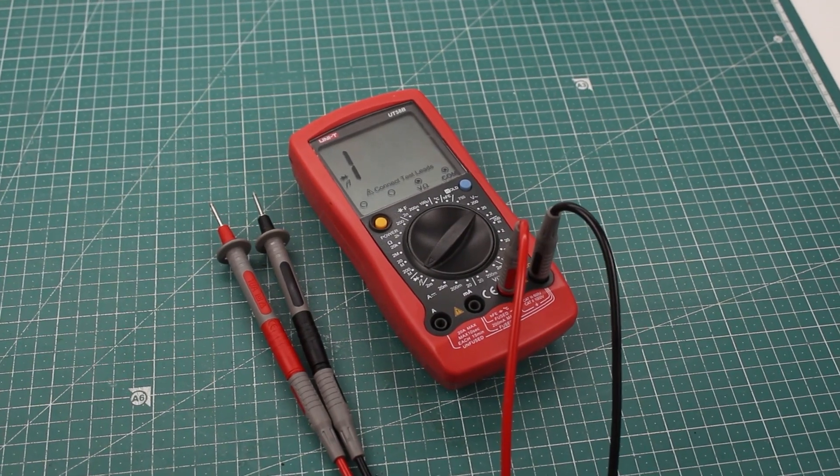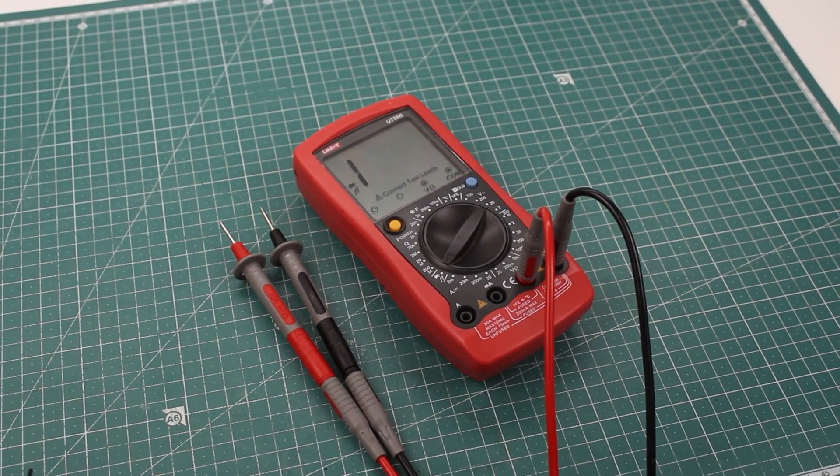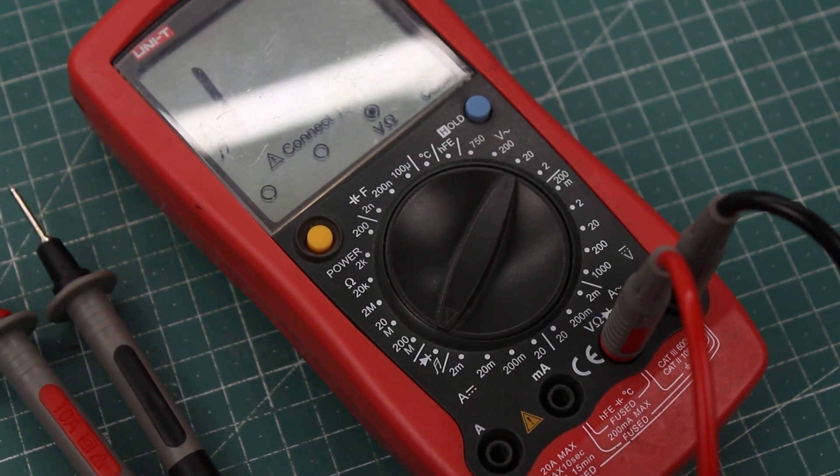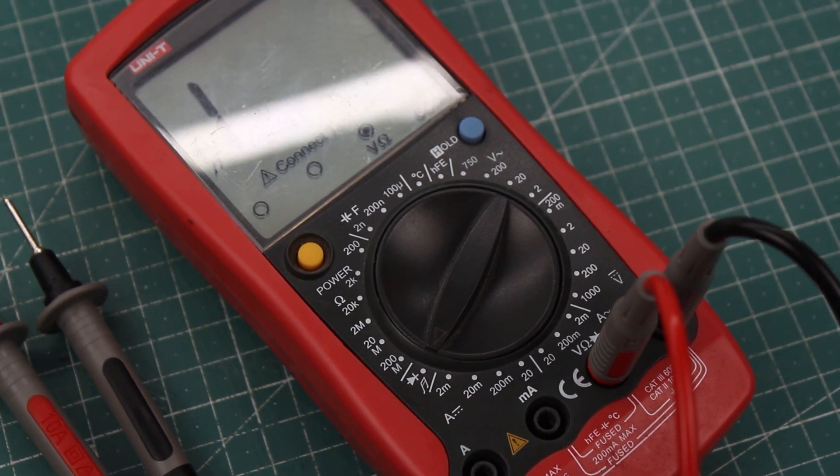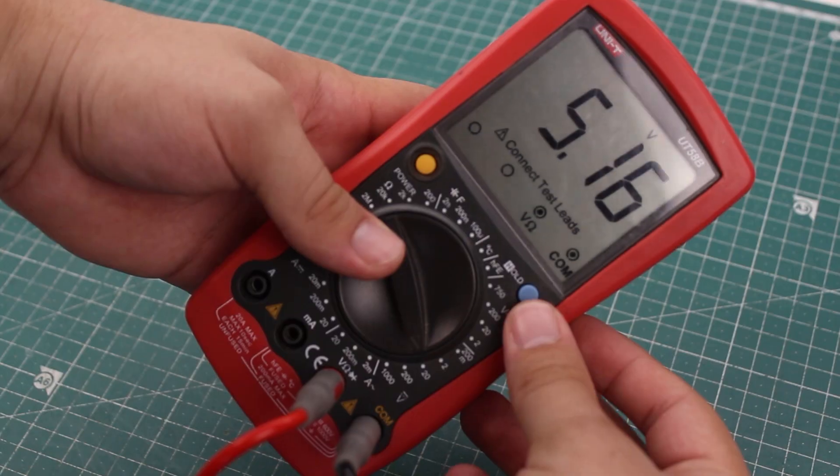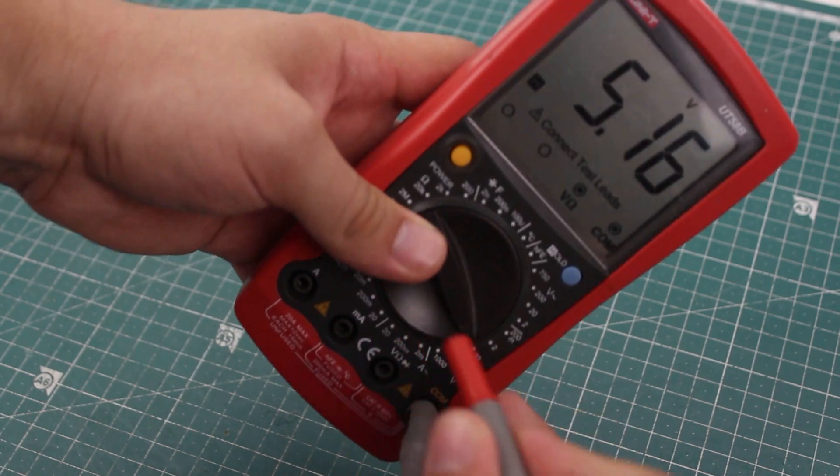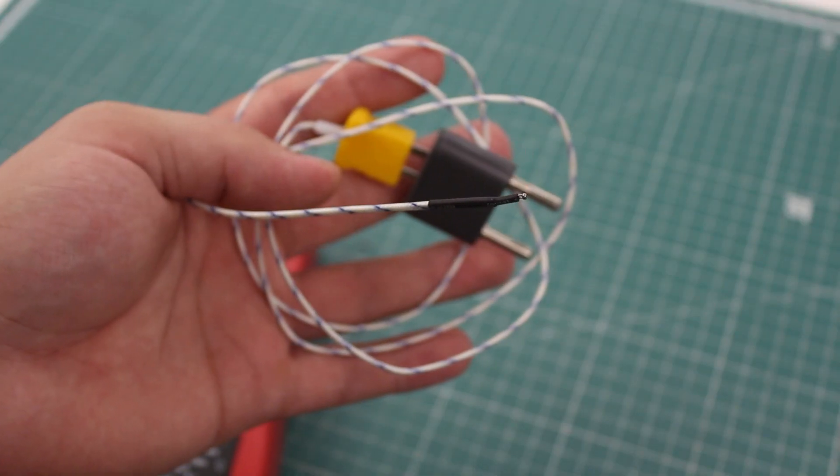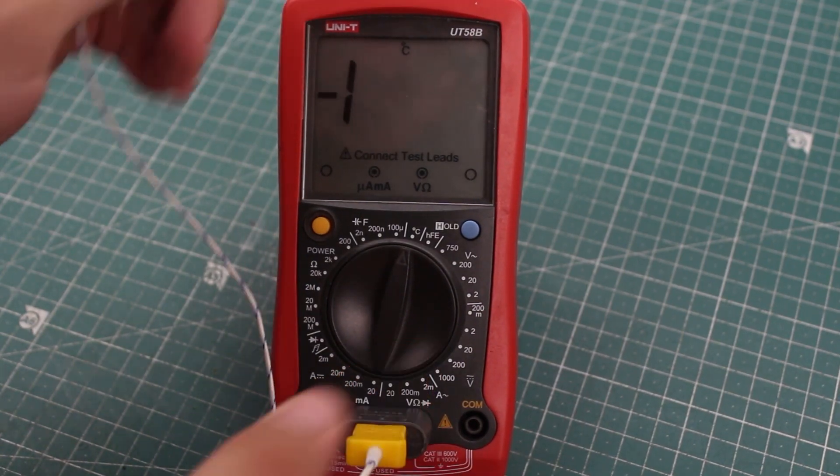And that's it, those are all main functions every multimeter has. Some multimeters can measure more things than the others, and some even have auto range function which can be very useful. On my meter, you can press the hold button to freeze the reading on screen, and it came with a thermocouple so I can even measure temperature with it.